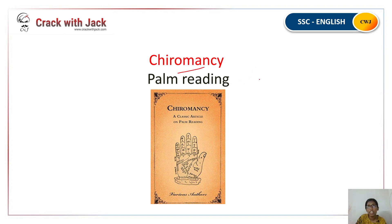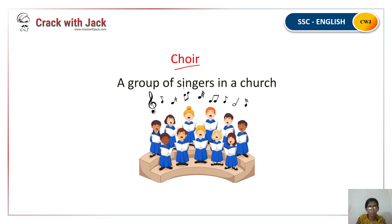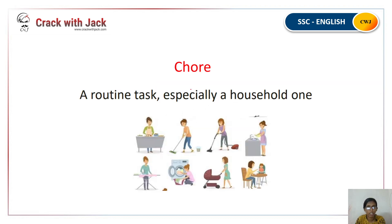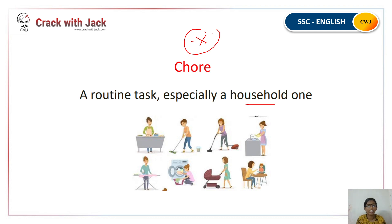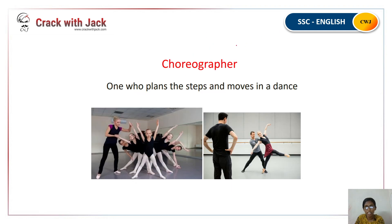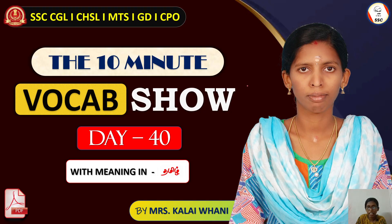Chiromancy means palm reading. Next, Chores refers to household tasks — daily routine work like cleaning. A Choreographer is a person who arranges dance steps — all the dance moves in a performance are designed by the choreographer.